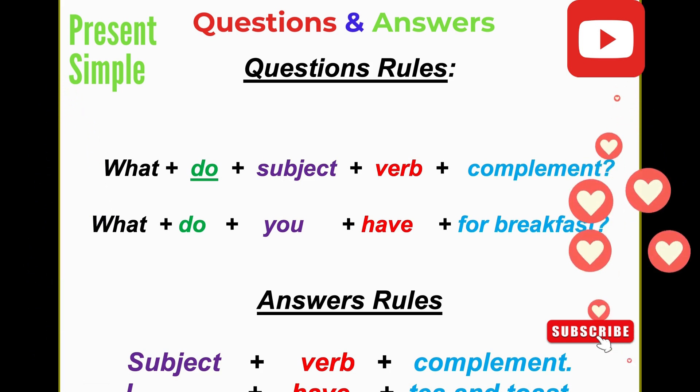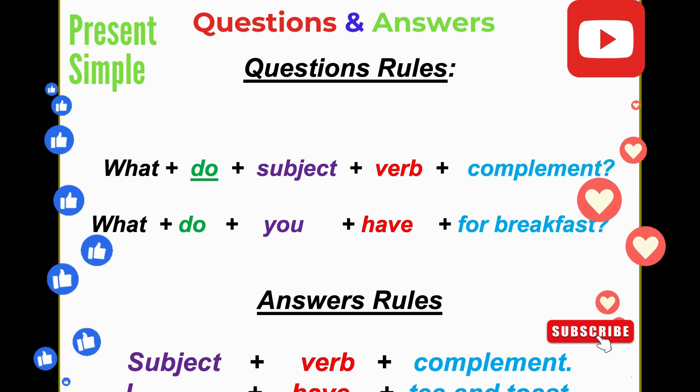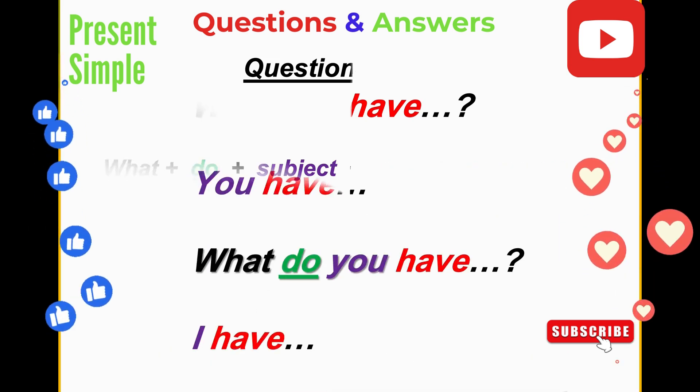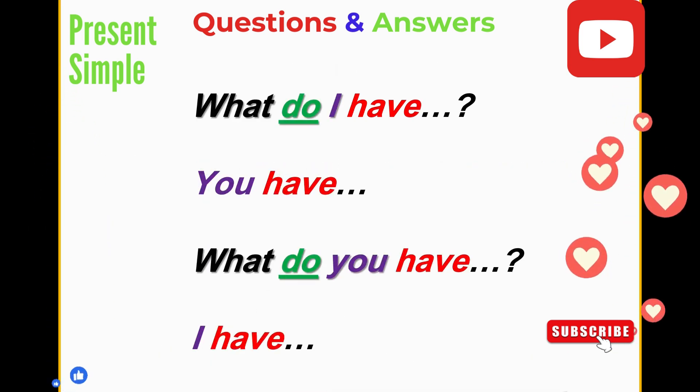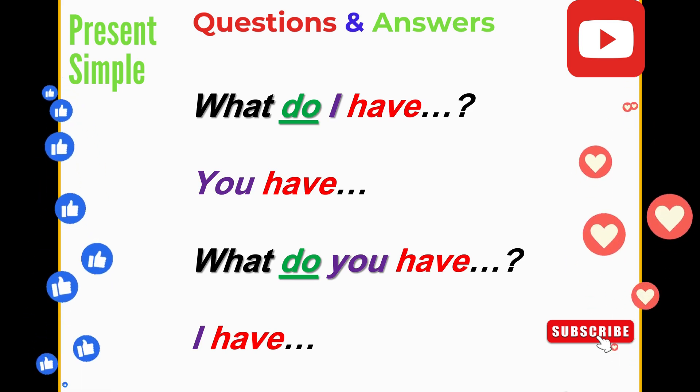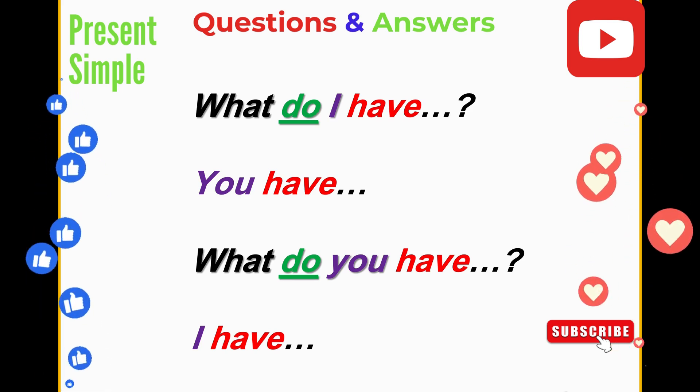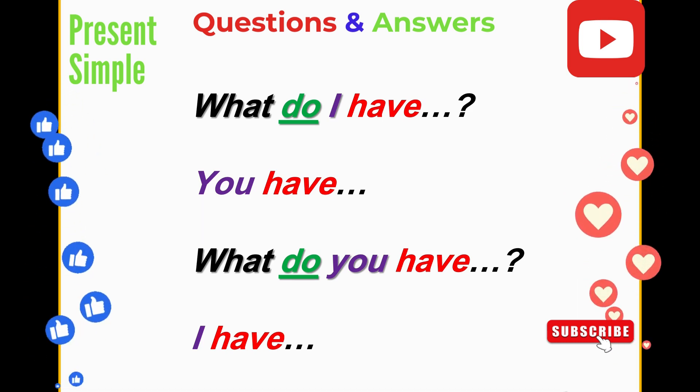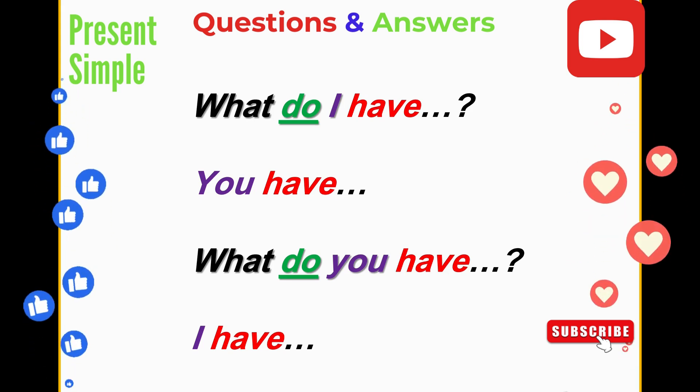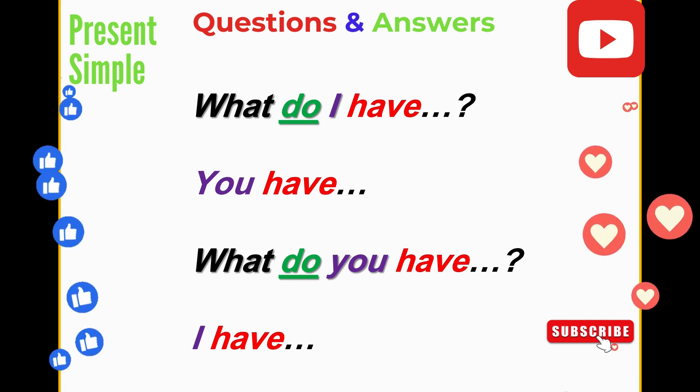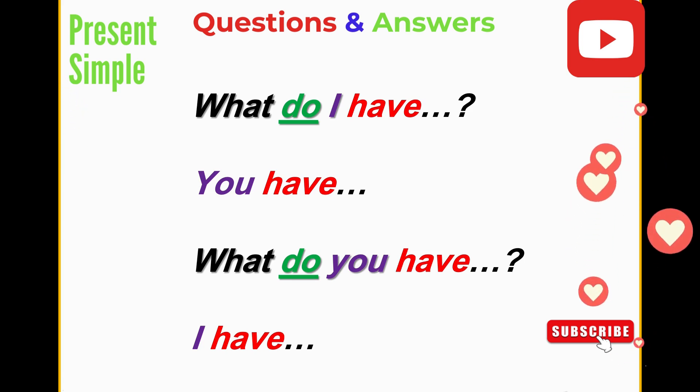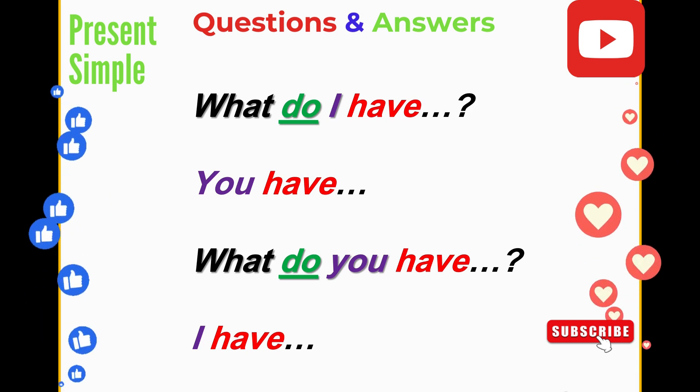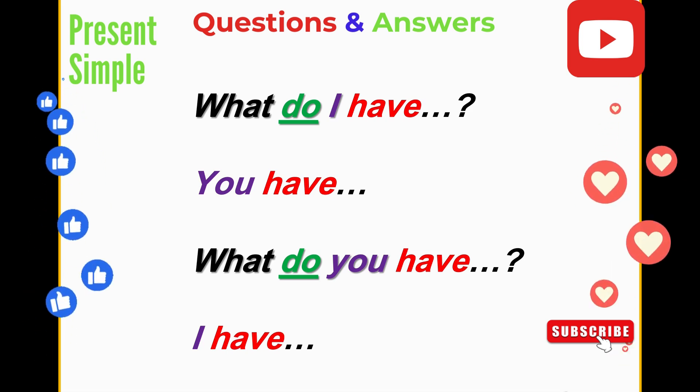The first question: what do I have? I am asking you, and you say to me you have something that I have. The second question: what do you have? The answer is I have something. First question with I, second question with you: what do I have? What do you have?